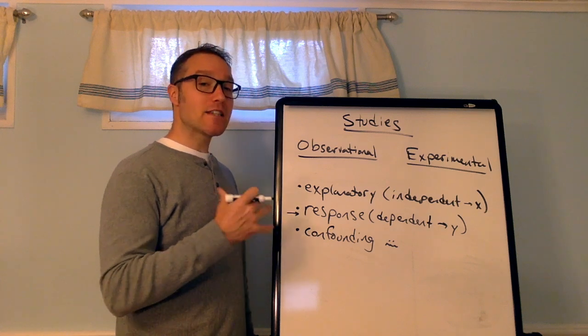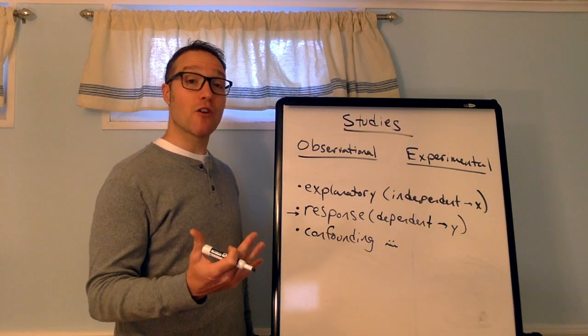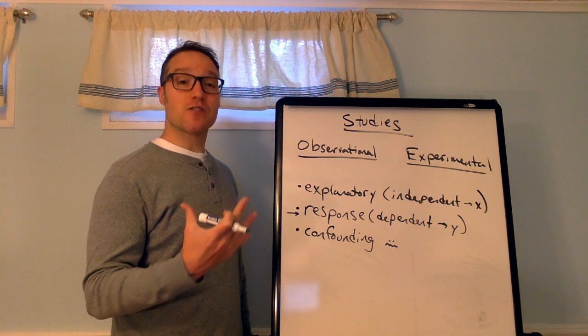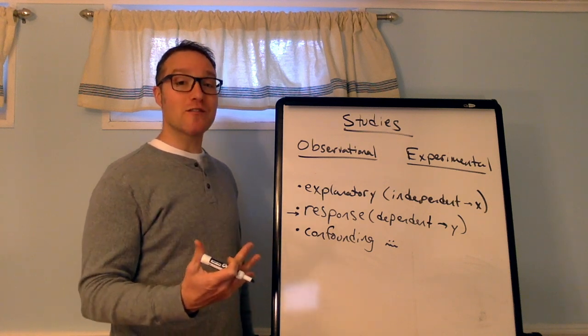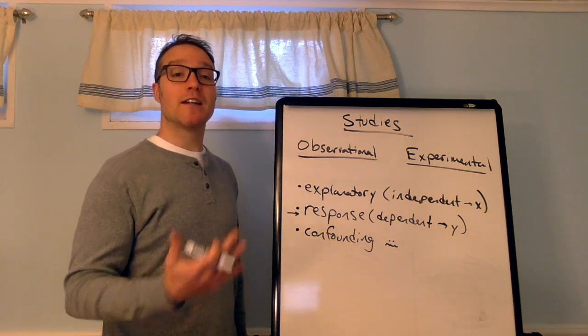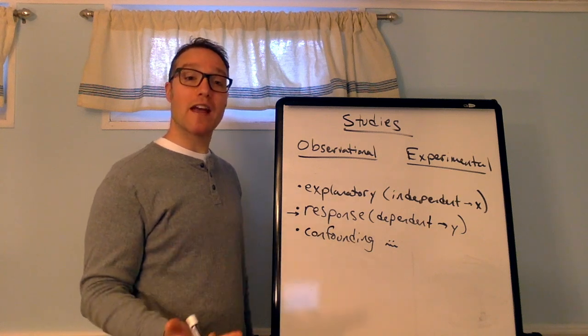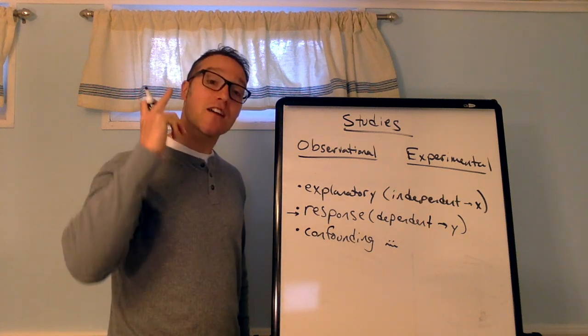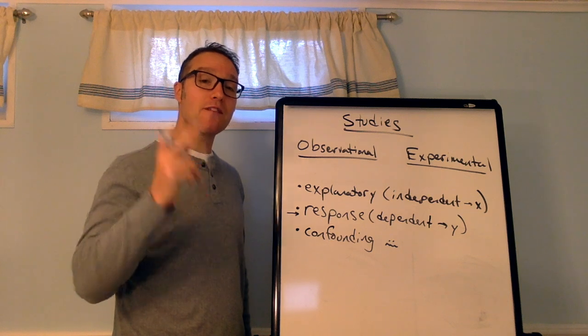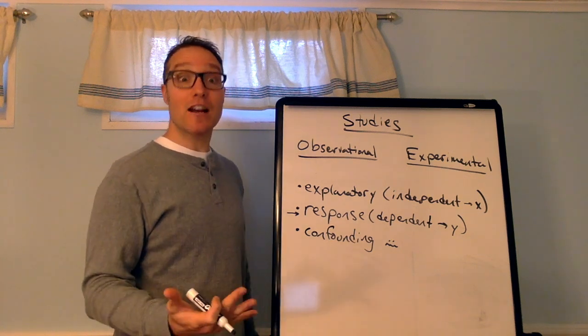An example of a confounding variable is the placebo effect. There's a mountain of evidence that taking a placebo, like a sugar pill, can have significant effects on people's health or behavior just because they think that it's real.